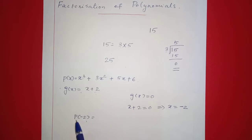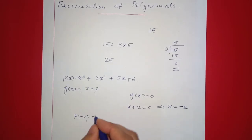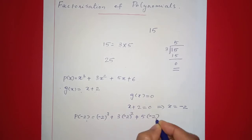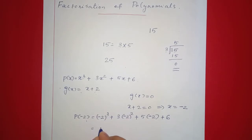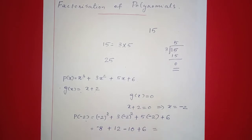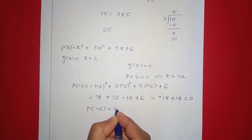Next, we compute P of negative 2. We substitute x = negative 2 into P(x): negative 2 raised to 3, plus 3 times negative 2 squared, plus 5 times negative 2, plus 6. That equals negative 8 plus 3 times 4 which is 12, plus negative 10, plus 6. That equals negative 8 plus 12 minus 10 plus 6.